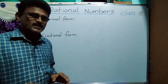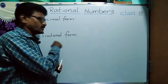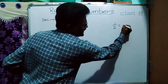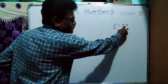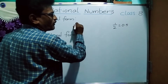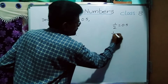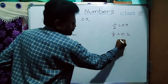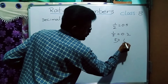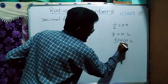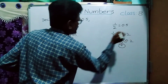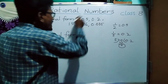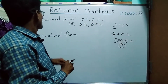Rational numbers are represented in two ways: one is decimal form, another is fractional form. For decimal form: 1 by 2 is written as 0.5, and 1 by 5 is 0.2. Other examples of decimal form: 3.76, 0.035, 1.5. These are all rational numbers represented in decimal form.